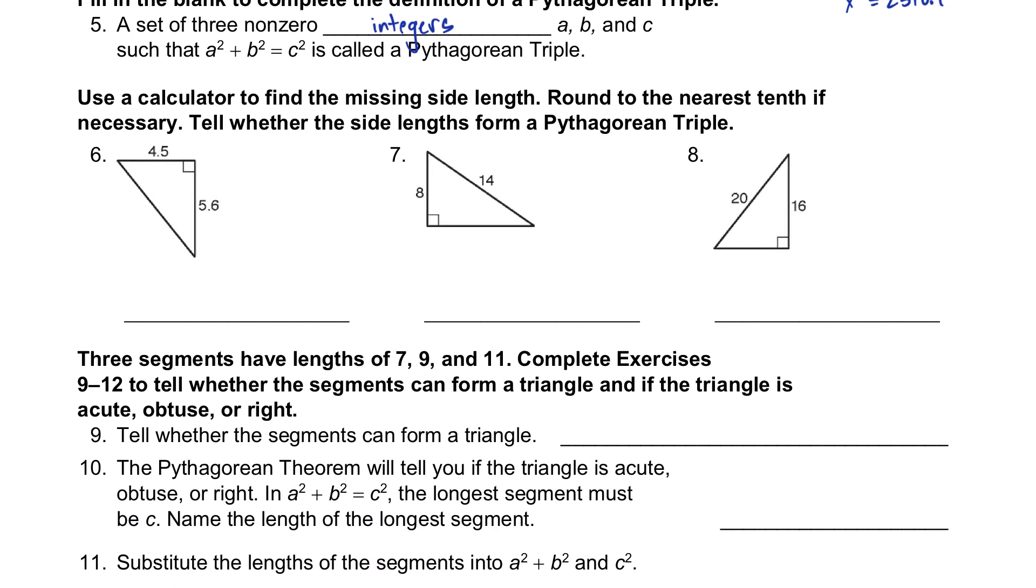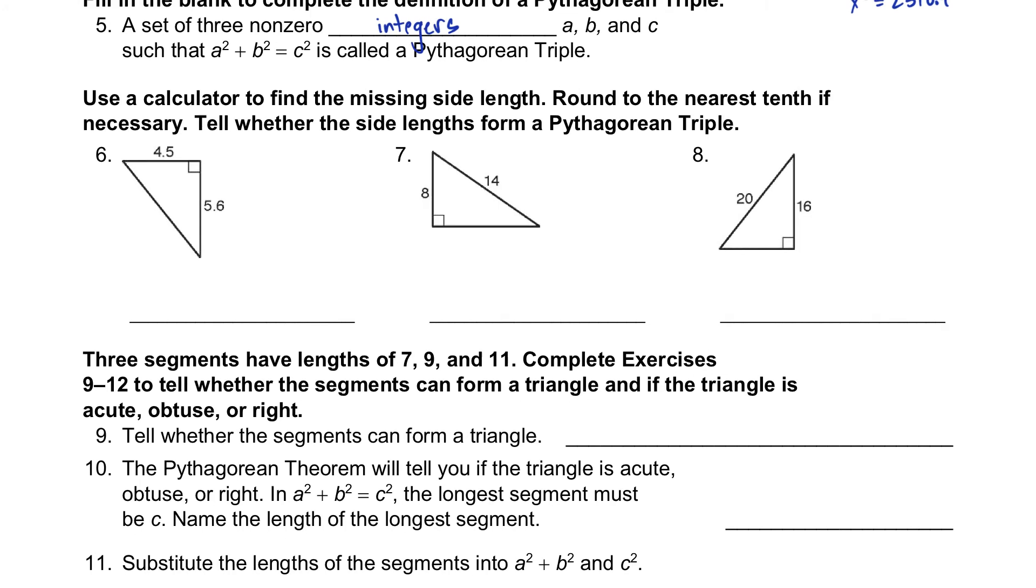Okay. So it says use a calculator to find the missing length to the nearest tenth. So let's see. Over here, this will be 4.5 squared plus 5.6 squared equals, there's the C, C squared. So 4.5 squared plus the 5.6 squared. That comes out to be 51.61. That's C squared. So take the square root of that answer, and you'll get 7.2, because it says to the nearest tenth. So you get 7.2 as the answer there. And no, this is not a Pythagorean triple because they're not integers.